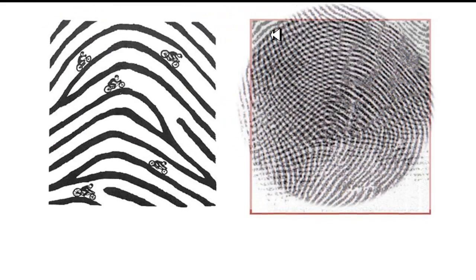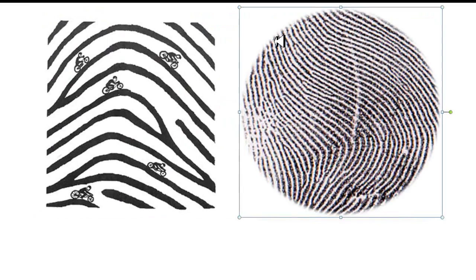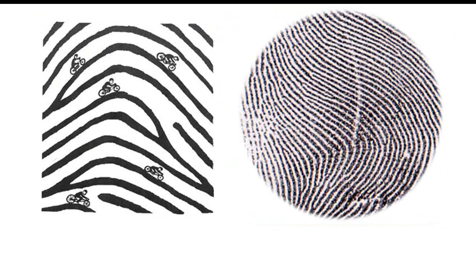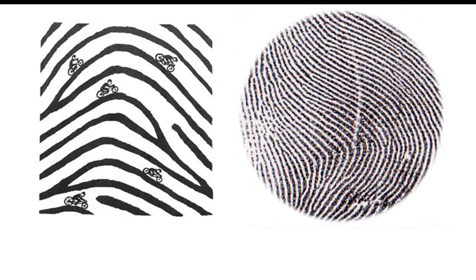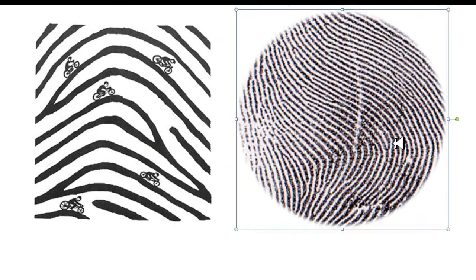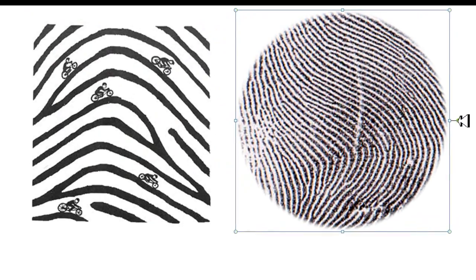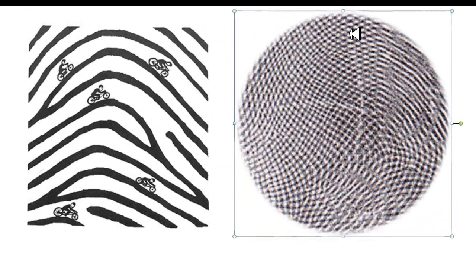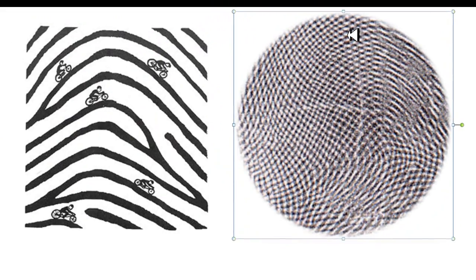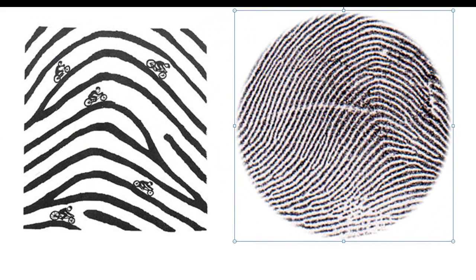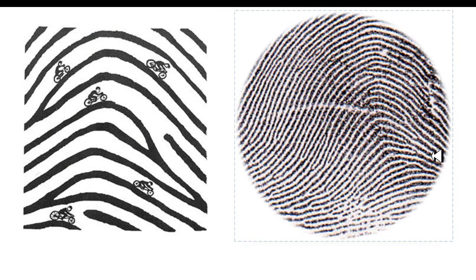Let's bring in a couple prints and see how they look. What about that one? Is that a plain arch? Hopefully you recognize that it's out of rotation. Let's put it in proper rotation. And yes, this is a plain arch. The ridges start on one side, rising and returning and flowing out the other side.